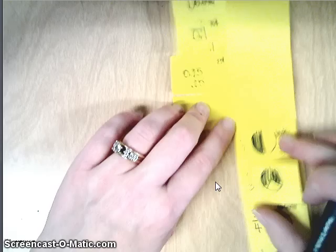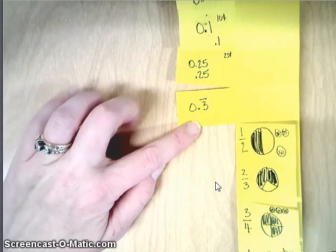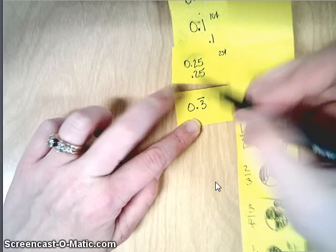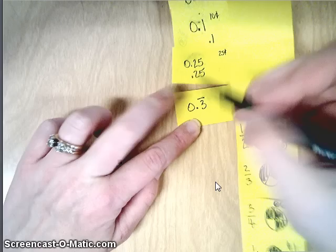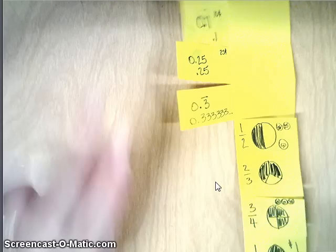Next we've got one third. As a decimal, this is one of those that repeats. So we write the bar over the number that repeats. So point three repeating, it would be equal to point three repeating.